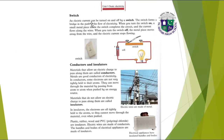What is a switch? An electric current can be turned on and off by a switch. The switch forms a bridge in the path of the flow of electricity. When you turn the switch on, a small metal piece inside the switch completes the circuit and the current flows along the wires. When you turn the switch off, the metal piece moves away from the wire and the electric current stops flowing. Here we have a picture of this switch.